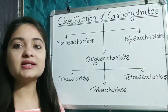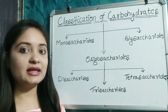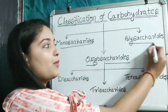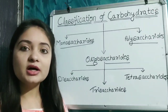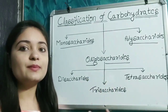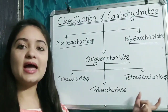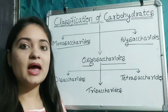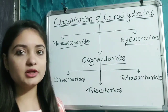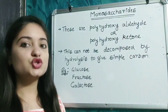Carbohydrates are mainly classified into three major categories: monosaccharides, oligosaccharides, and polysaccharides. Further, oligosaccharides are classified into three subcategories: disaccharides, trisaccharides, and tetrasaccharides. We will discuss each classification in detail.